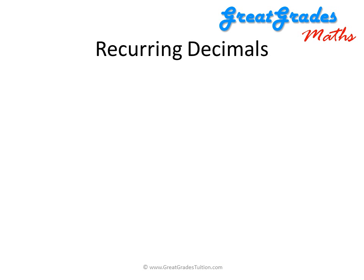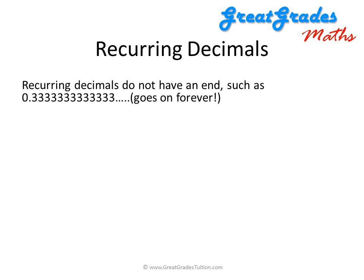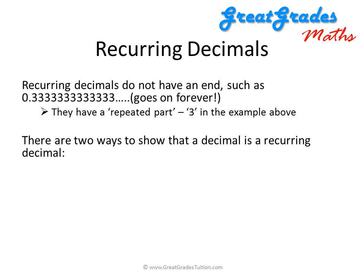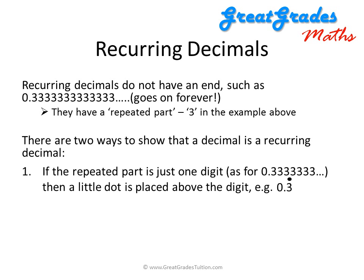Now let's look at recurring decimals. Recurring decimals do not have an end — a good example is 0.33333... going on forever, never stopping. Recurring decimals have a repeated part; in this example it's 3. There are two ways to show a recurring decimal: if the repeating part is just one digit, a little dot is placed above that digit.